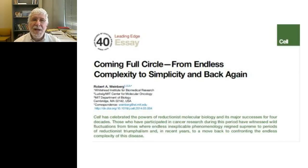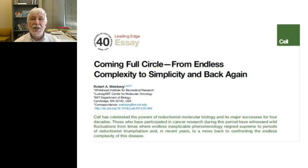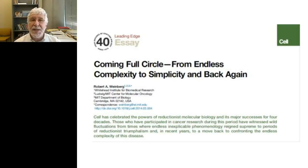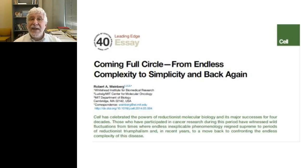We ignore this complexity at our peril. This has been well stated by a paper in Cancer Cell by Robert Weinberg — an initial proponent that finding the oncogene or tumor suppressor gene would make precision medicine an unequivocal success — who has come to recognize that those simple answers just aren't producing the results we hoped for, and that it's essential we go back to embracing the full complexity of cancer.